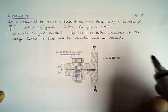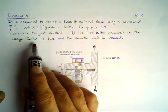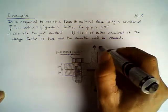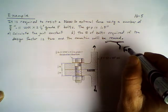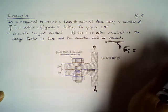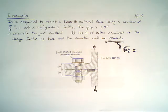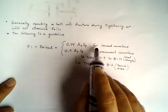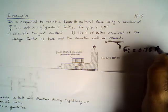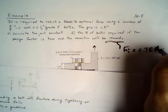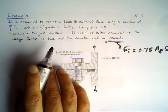We need to calculate the joint constant, and then calculate the number of bolts required if the design factor is 2 and the connection will be reused. Connection will be reused basically tells me my preload force, which is 0.75. Based on what we discussed earlier, if the connection is to be reused, meaning you're going to disassemble this and reassemble it later, then your preload is going to be 0.75 times Ap times Sp.